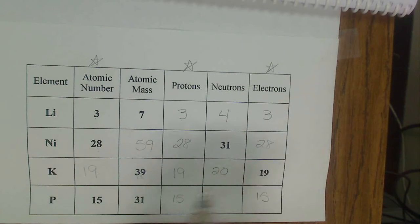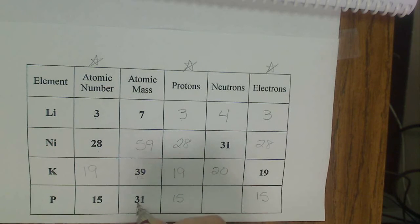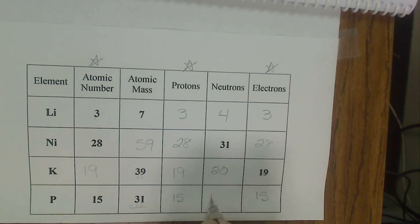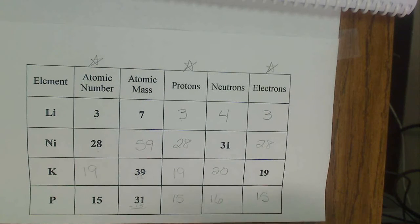For phosphorus, I am looking for my neutrons here. So I take 31 minus 15, so I would minus 15, and I would end up with 16 neutrons.